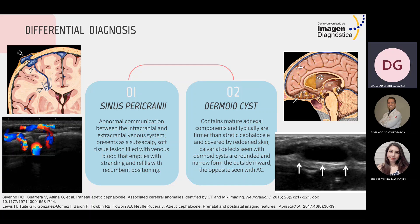The dermoid cyst contains mature adnexal components and is typically firmer than atretic cephalocele and covered by normal skin. Calvarial defects seen with dermoid cysts are rounded and narrow from the outside inward, the opposite of what is seen with atretic cephalocele.